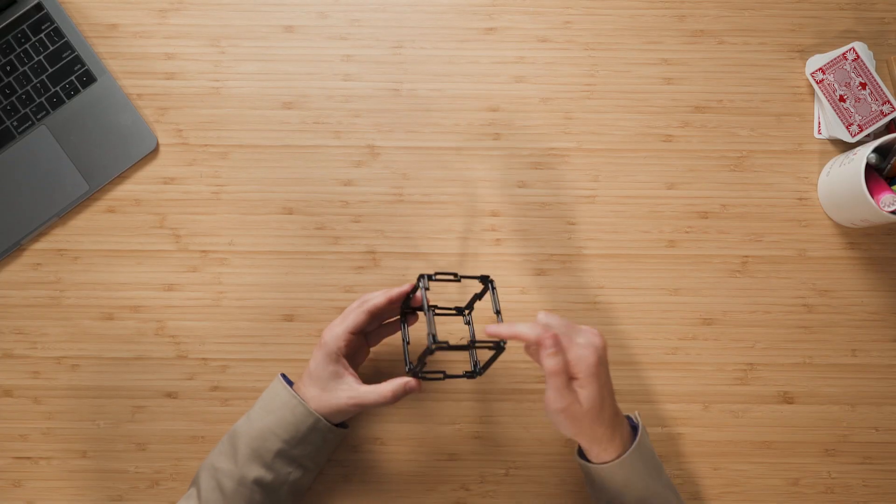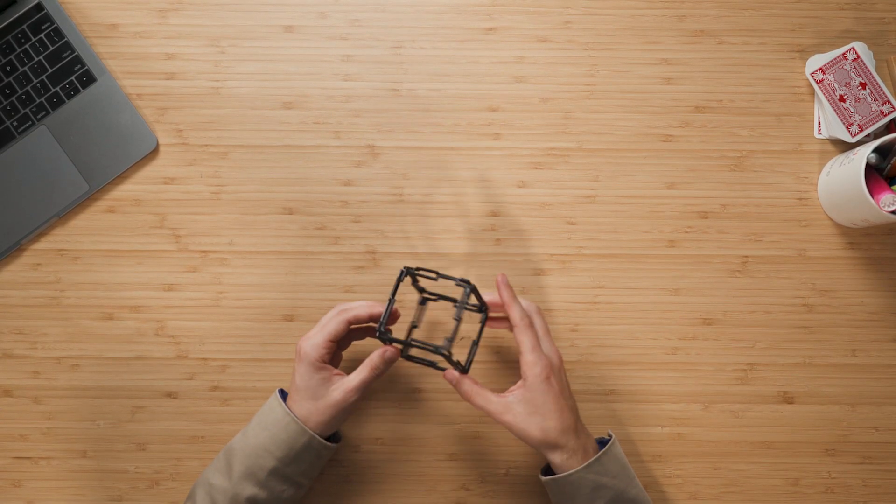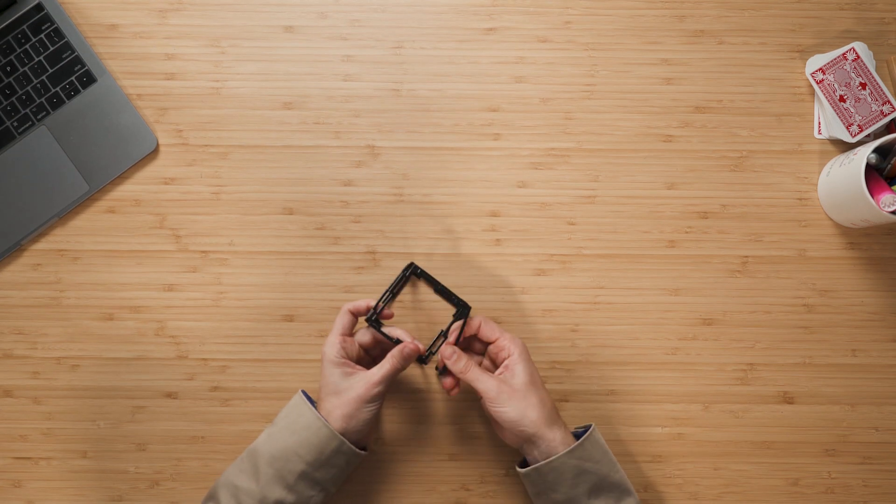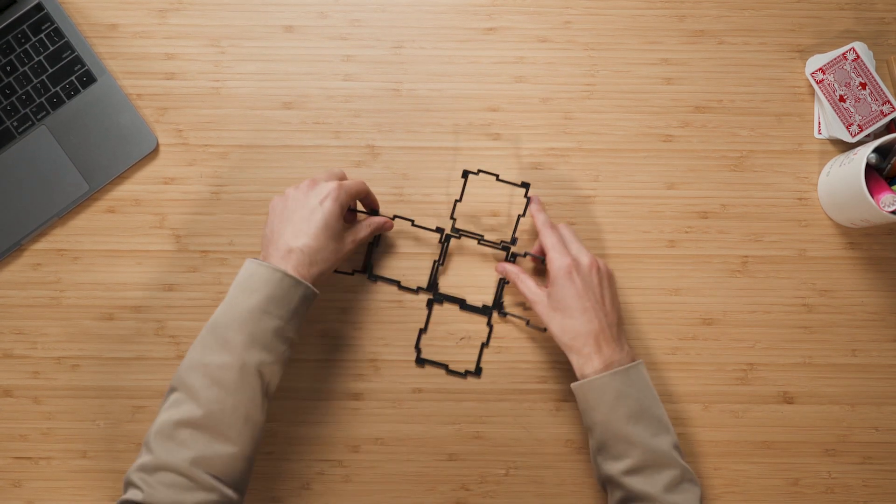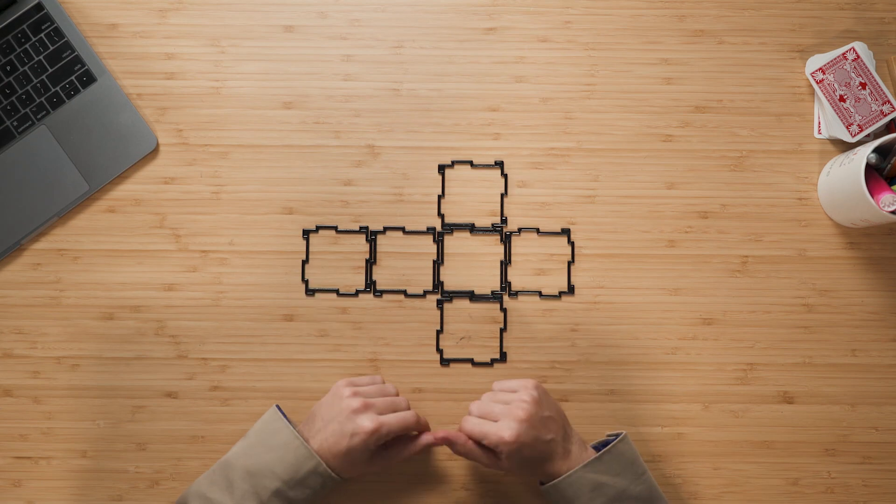This here is a size one box. It's called a size one box because every single face has just one square on it. If I pull it apart, you'll see that my size one box is made up of six pieces.